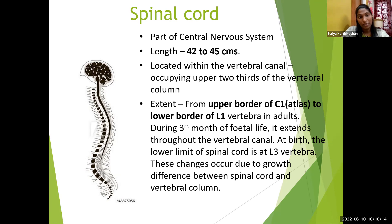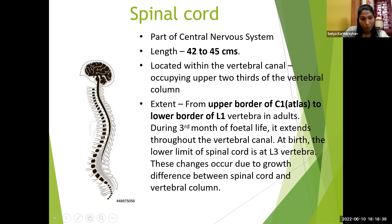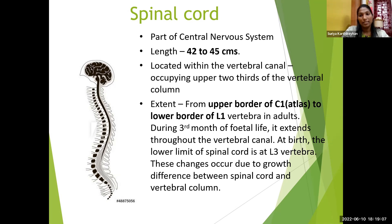What is the extent of the spinal cord? In adults, it extends from the upper border of C1 vertebra — otherwise called the atlas — to the lower border of L1 vertebra. In the fetal life, during the third month, it extends throughout the vertebral canal. During birth, the lower limit is at the L3 vertebral level. In adults, it will be L1. These changes occur due to growth difference between the spinal cord and the vertebral column.